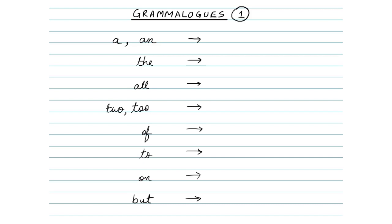First of all, we have 'A' or 'N'. To represent 'A' or 'N', we simply make a dark dot above the line, like this.